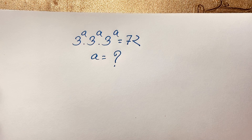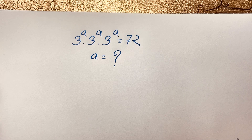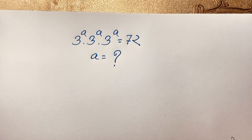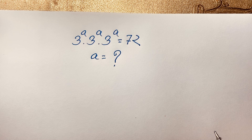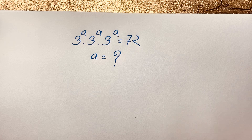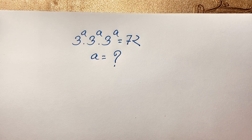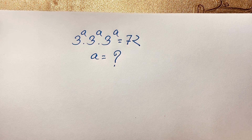Hello everyone. In this video, we'll solve a nice German math olympiad equation: 3 to the power of a, times 3 to the power of a, times 3 to the power of a, is equal to 72. We'll find out what is the value of a in this exponential equation.